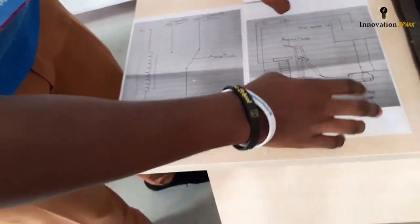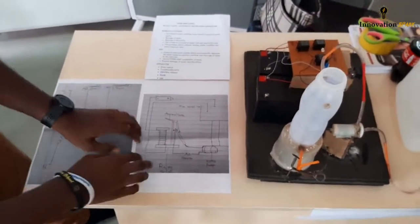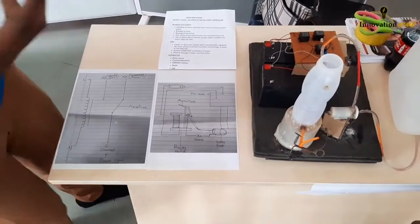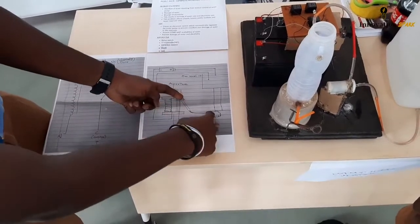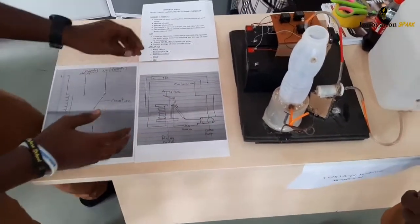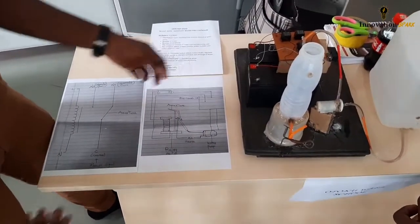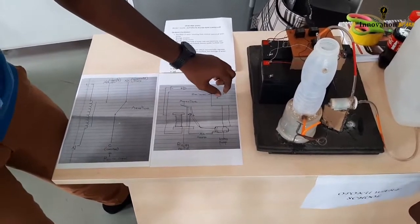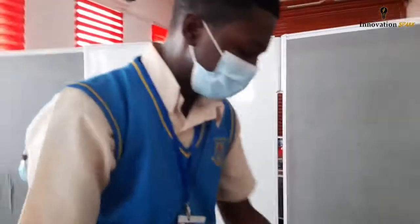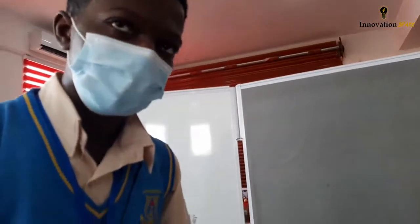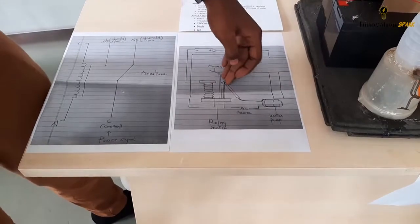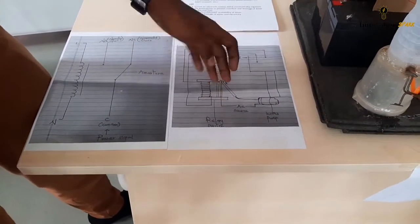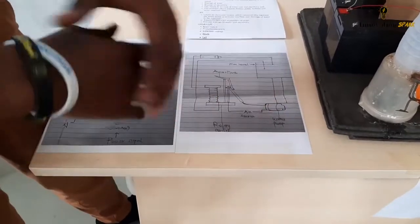Now the diagrammatic representation of the project: this is the relay — the black device. It controls two circuits: one complete circuit, and then from the armature to the water pump is another circuit. We have two conductors inside the water. When the water rises and touches these two conductors, it completes one part of the circuit, which reduces current in the coil, generates a magnetic field, attracts the armature, and shifts the conductor away from the one powering the water pump — so the water pump automatically turns off.